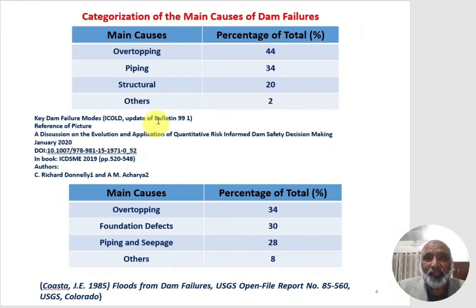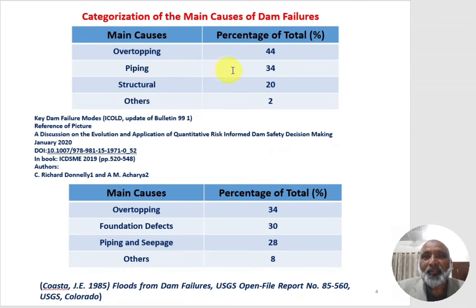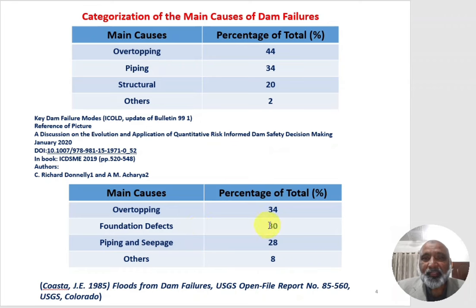This table describes the percentages of different types of failures. ICOLD, in its Bulletin 99-1 in 2020, referred to by Richard Donnelly and A.M. Acharya, categorized dam failures as: 44% due to overtopping, 34% due to piping and seepage, 20% due to structural failures, and 2% due to other reasons. Costa in 1985 found 34% due to overtopping, 30% due to foundation defects, 28% due to piping and seepage, and 8% due to other reasons.